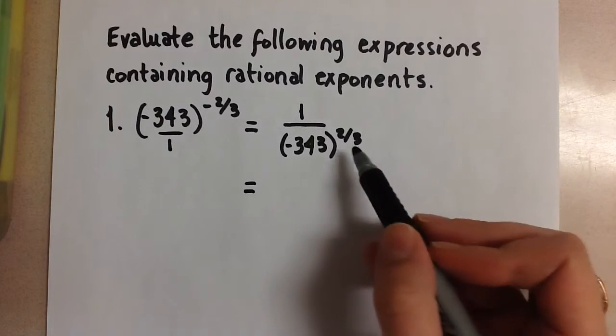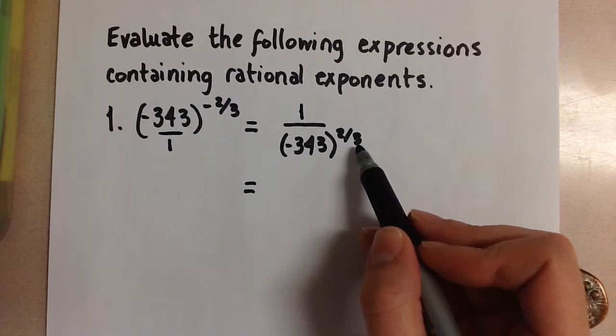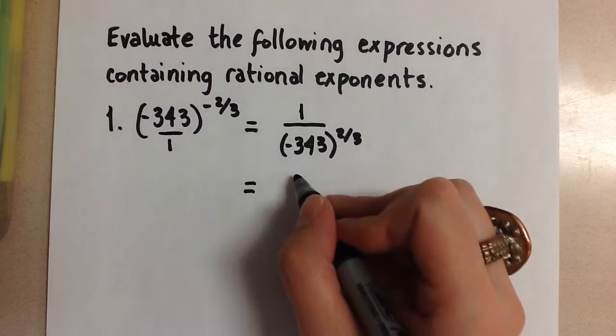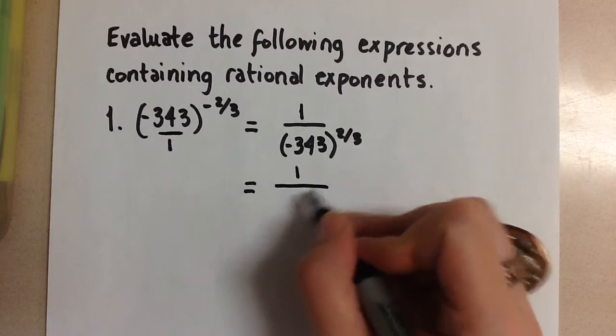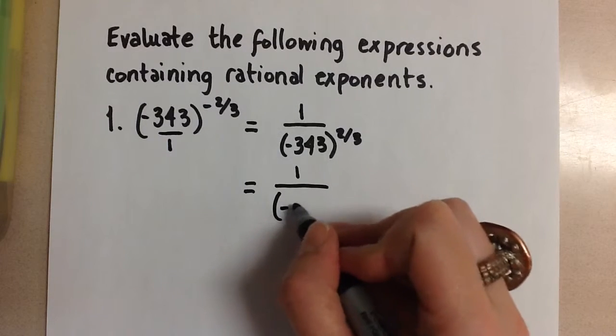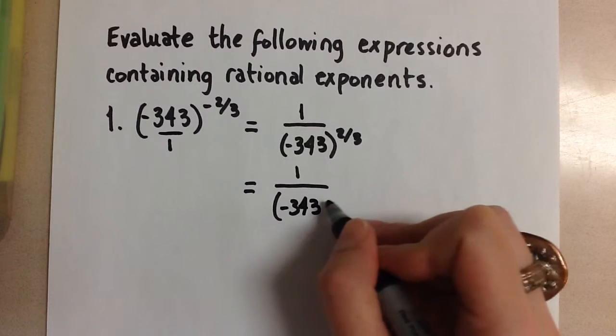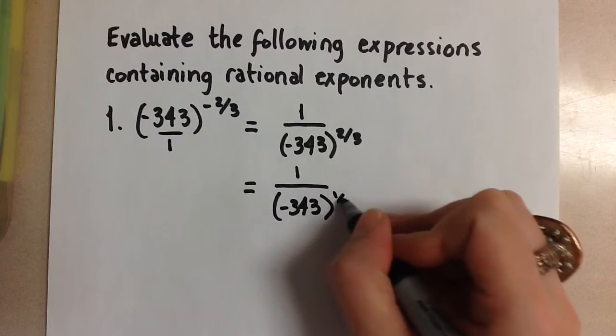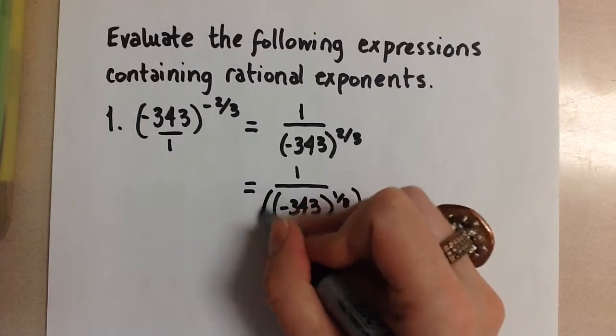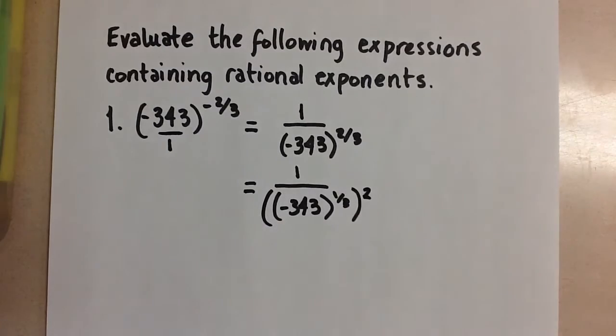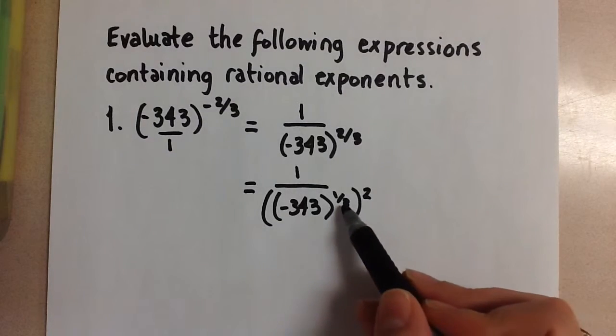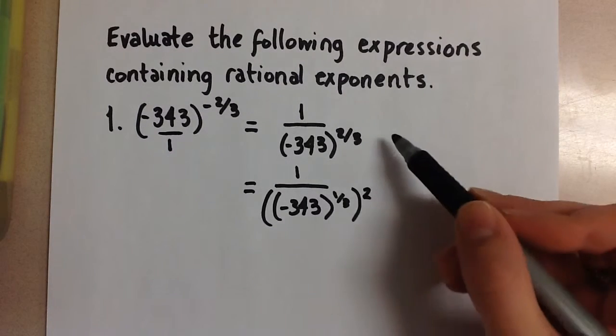The next thing we're going to do is break down that 2 over 3 in the exponent using the power of a power rule. This can be broken into negative 343 to the power of 1 third and then to the power of 2, because we know that 1 third times 2 is equal to 2 thirds.